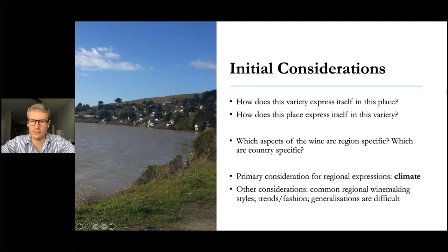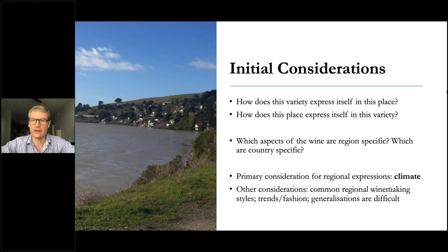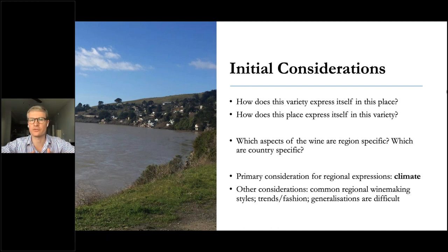This slide is a reminder about what we're going to be looking for today: the characteristics of Sauvignon Blanc as a variety and how the region in which it is grown expresses itself in the glass. I've drawn a distinction between region and country, which will be more relevant in this session. Within individual countries there are general winemaking styles resulting from climate but also from winemaking choice or national styles.